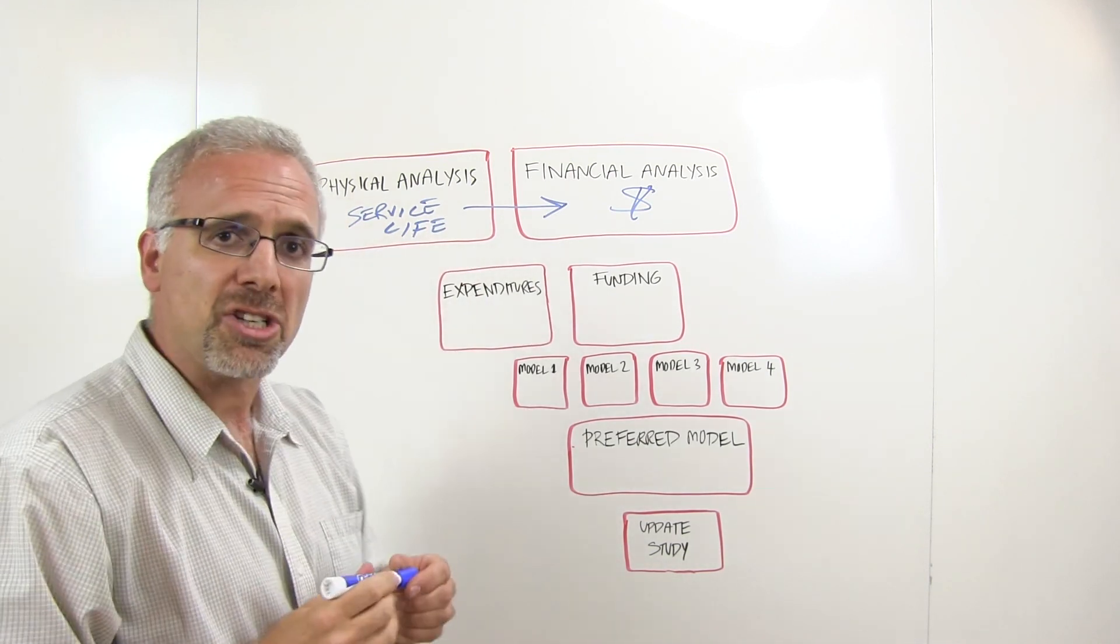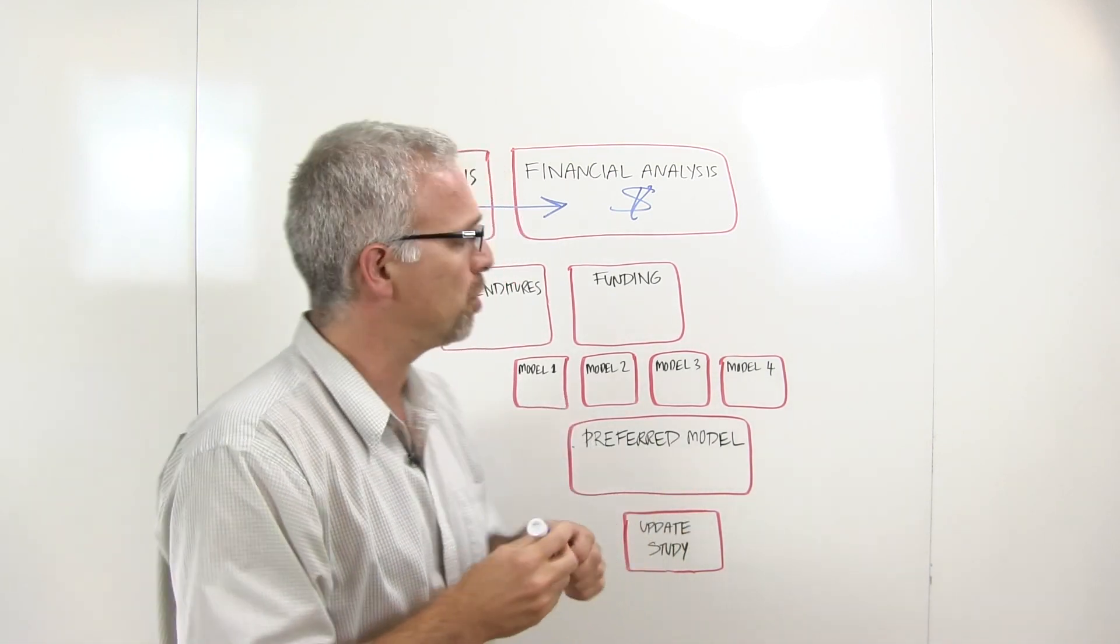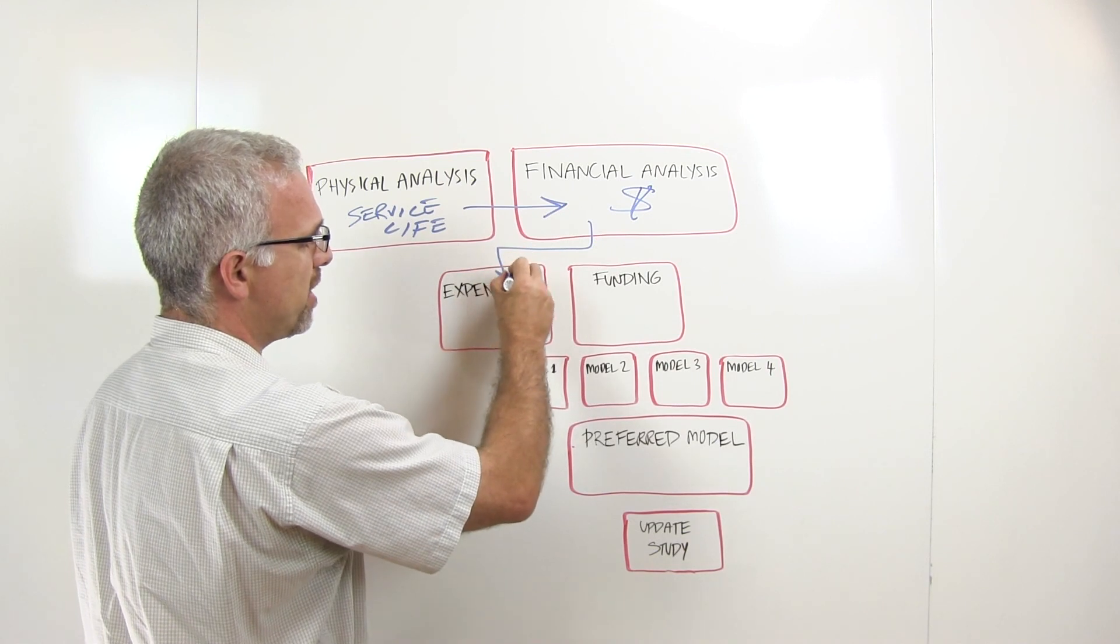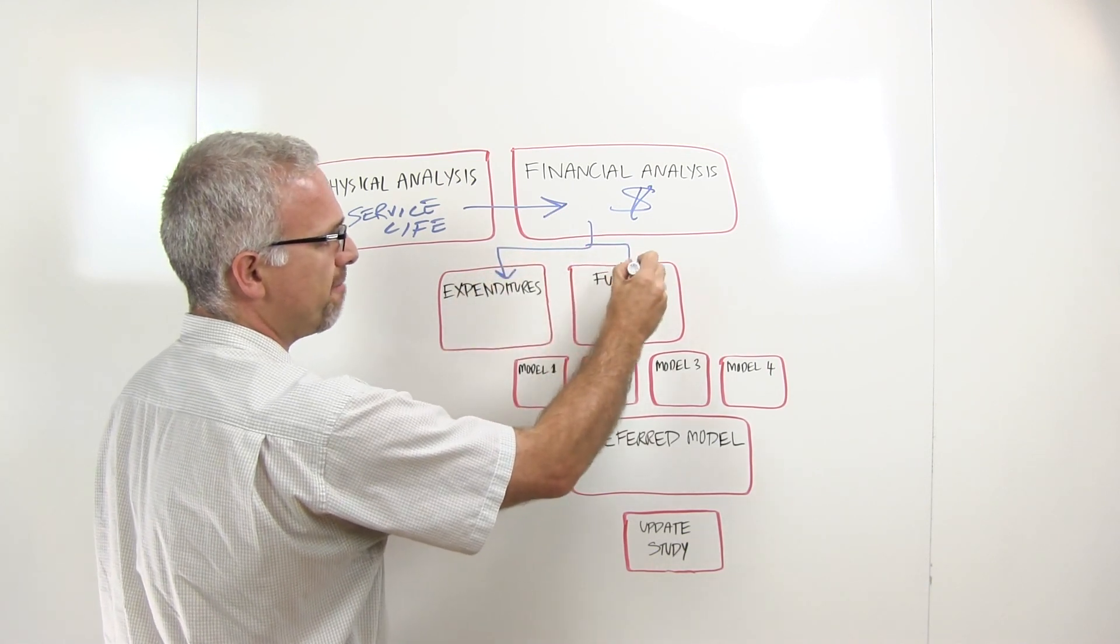The financial analysis in turn is made up of two parts. We have on the one hand an expenditure plan, on the other hand a funding plan.